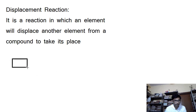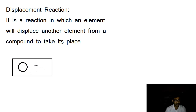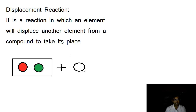Suppose we have a compound in which there are two elements — call them element red and element green. Now this compound is trying to react with some other element, suppose that element is element blue.